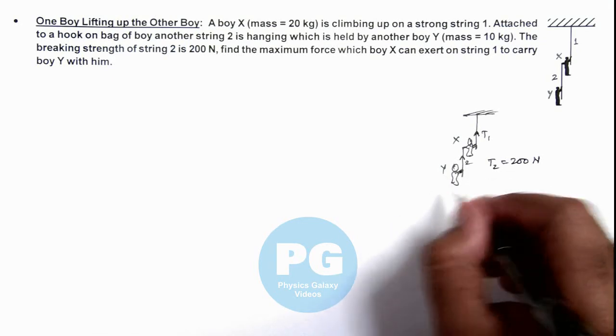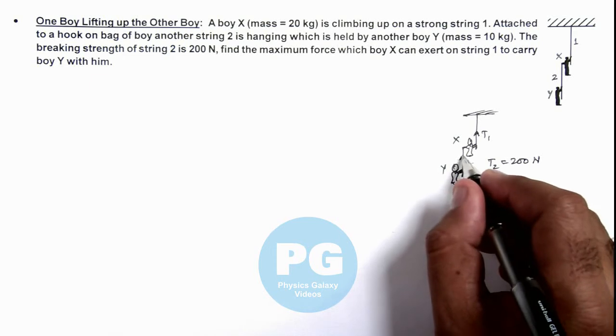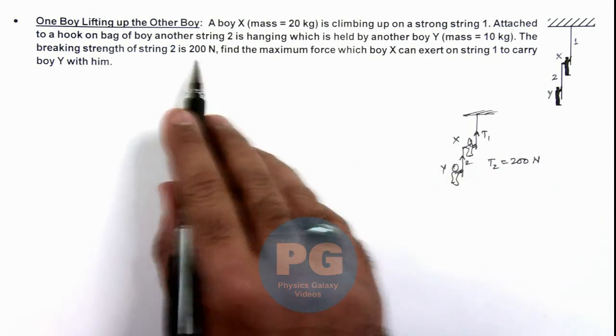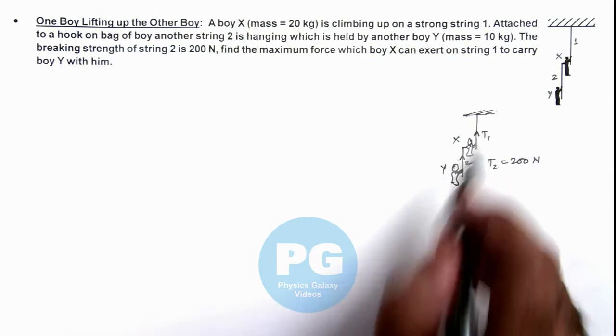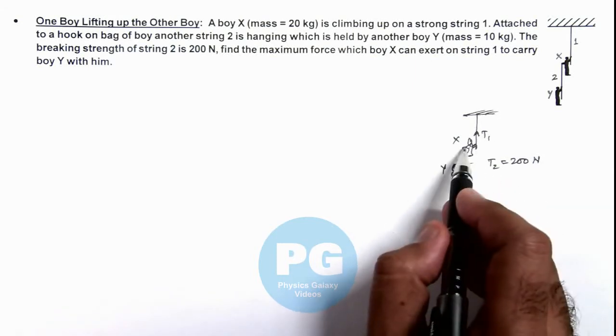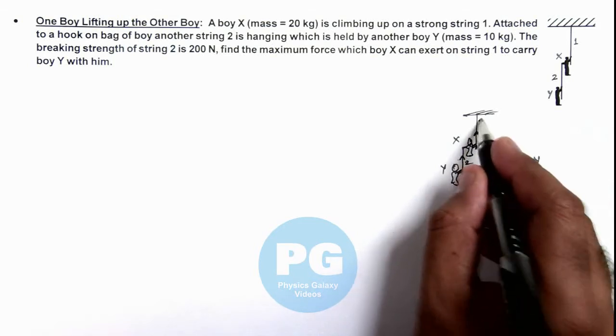Certainly the Boy Y will be having a less acceleration. So maximum tension which string 2 can bear is up to 200 newtons. So we consider it to be 200 newtons and find the value of T1, that is the force exerted by Boy X on string 1 to carry Boy Y with it.